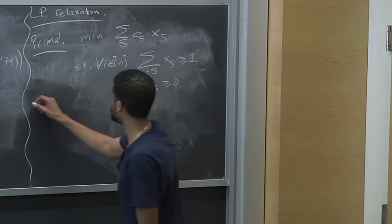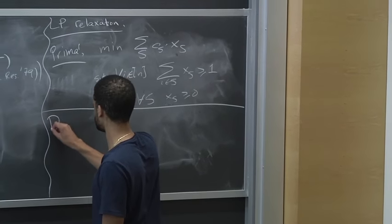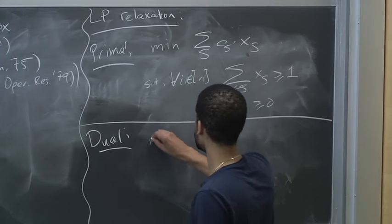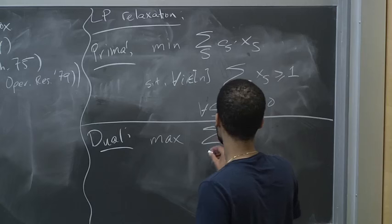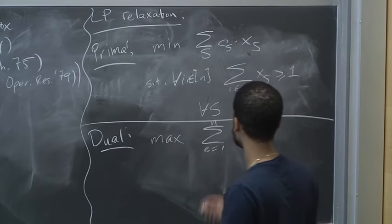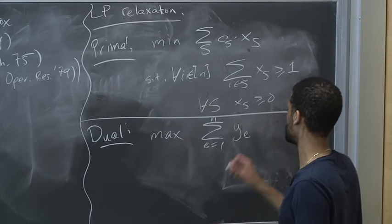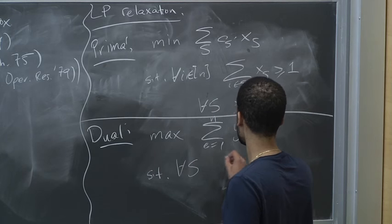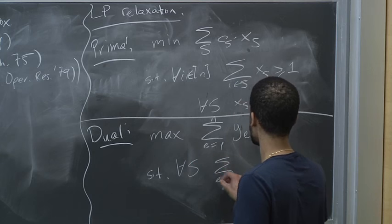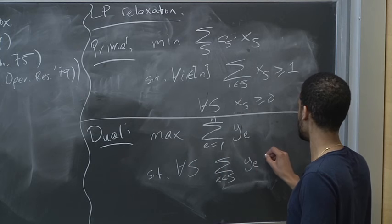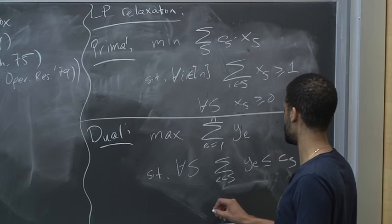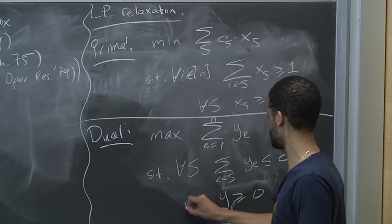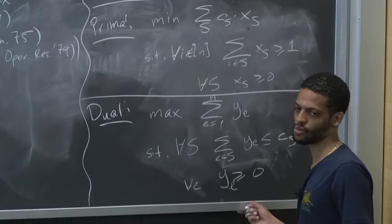The dual is: we want to maximize the sum of YE going from 1 to N, subject to the constraint that for all sets S, the sum of elements in that set of YE is at most CS, and also Y is a non-negative vector.